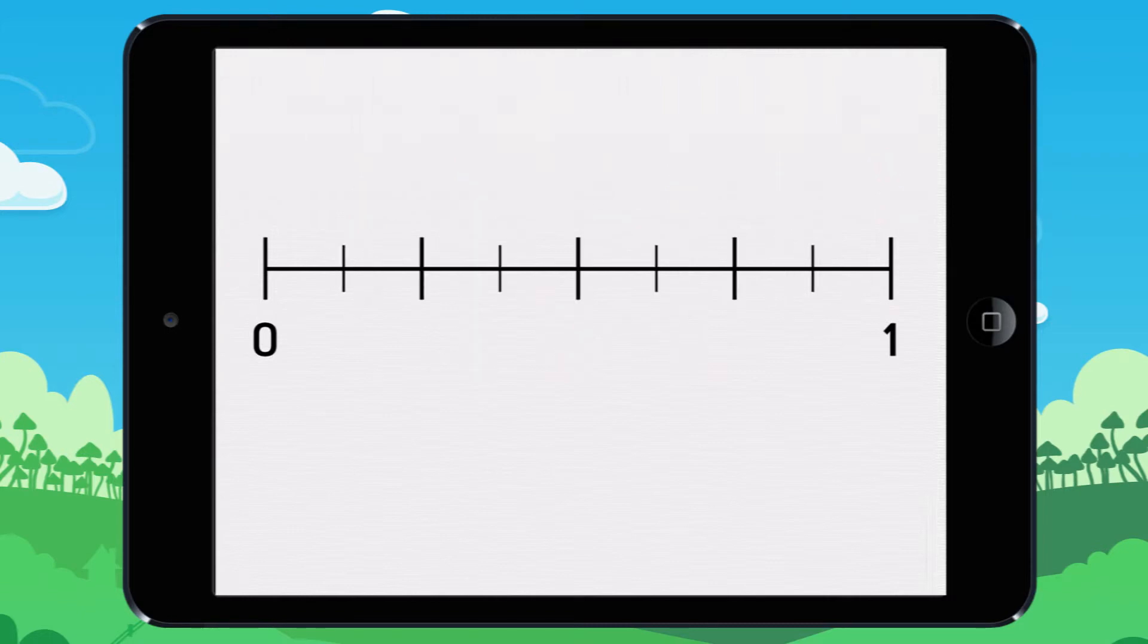This is another number line marked with a zero and one. The large markers represent halves. The medium sized markers represent quarters. The smallest markers represent eighths.